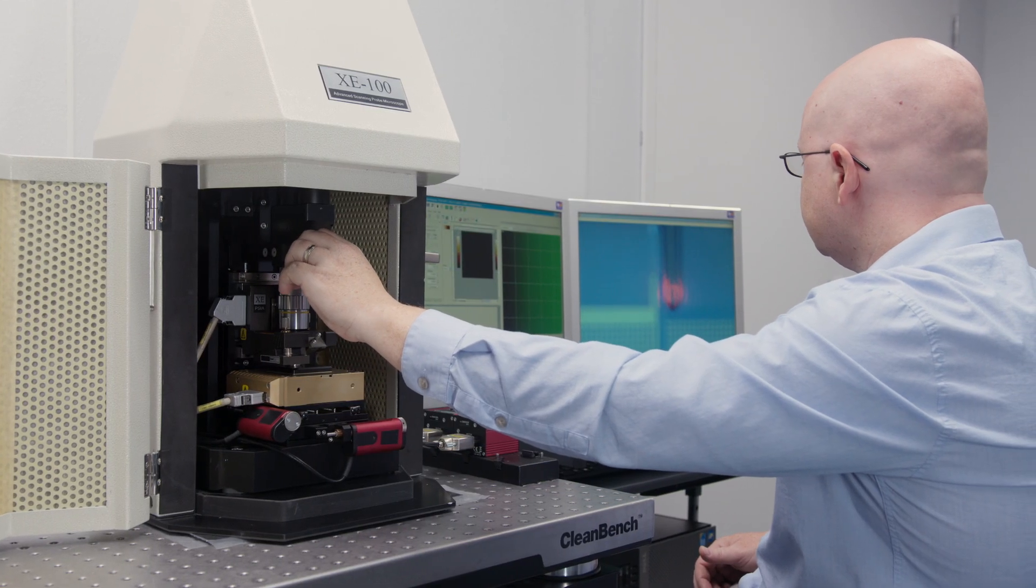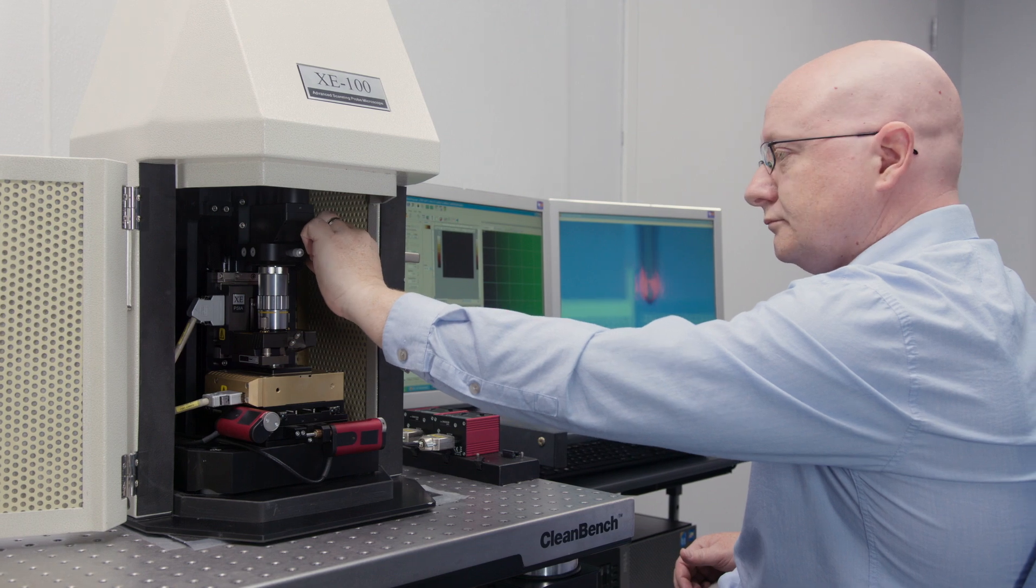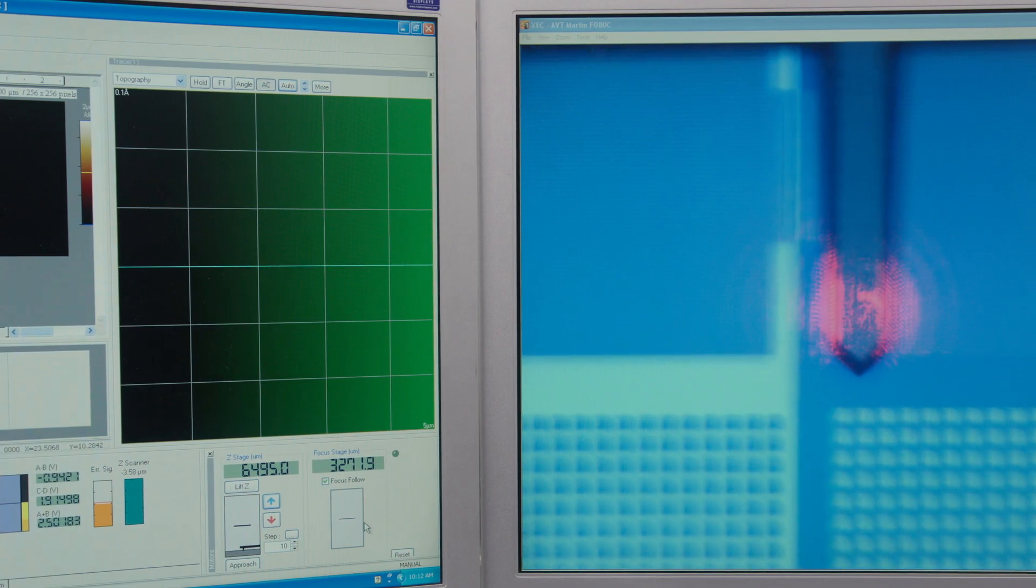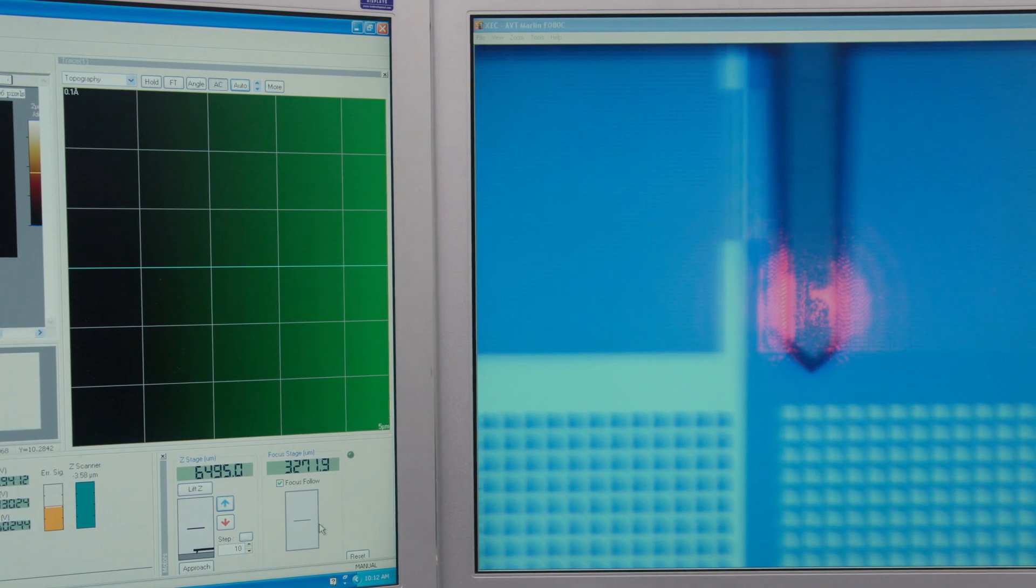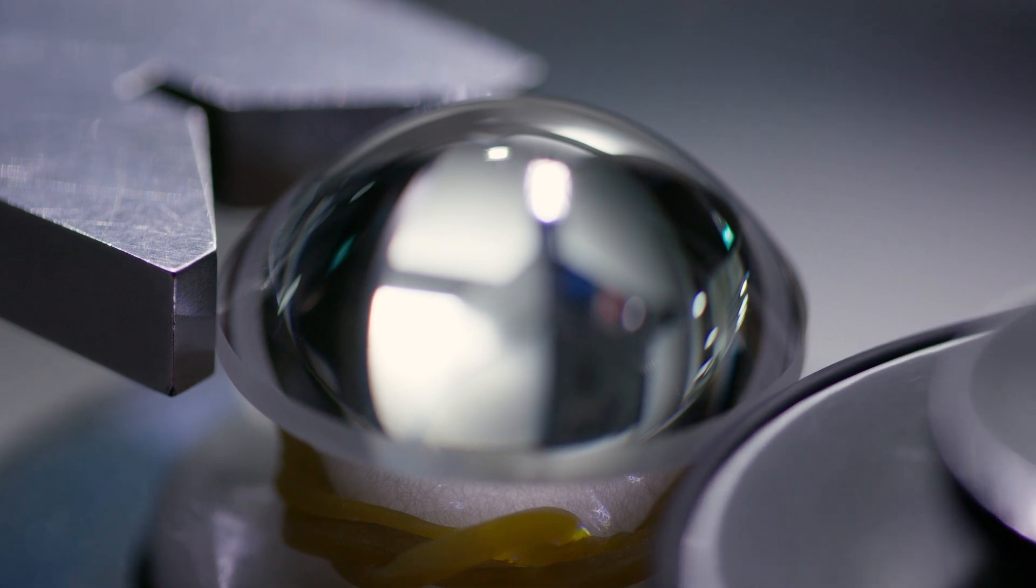Edmund utilizes many other metrology techniques, including atomic force microscopes for surface roughness, centration measurement machines for lens alignment, and autocollimators for angle verification.